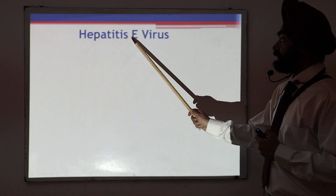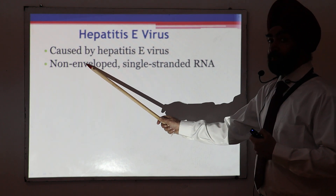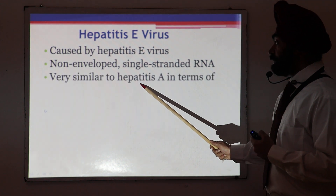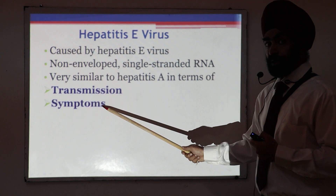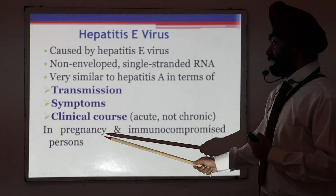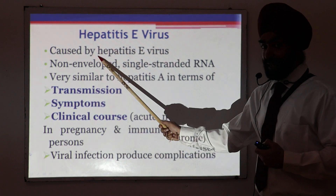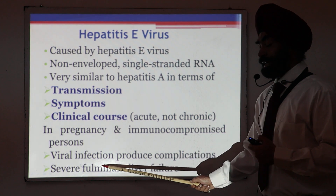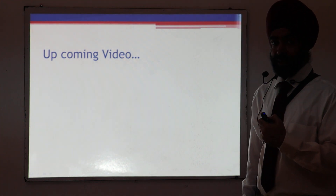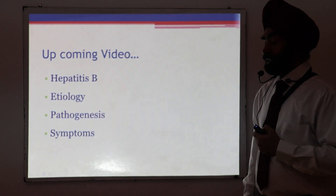Now, hepatitis E virus is also non-enveloped, single-stranded RNA — similar to hepatitis A. Transmission is also by the oral-fecal route, and symptoms are very similar with an acute clinical course, not chronic. However, in pregnancy or in immunocompromised persons, hepatitis E can produce severe complications, including massive liver failure. In the upcoming video, I will discuss hepatitis B — its etiology, pathogenesis, and symptoms.